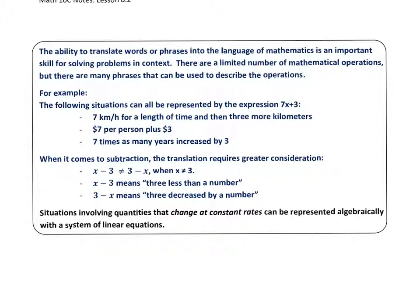When it comes to subtraction, however, the translation requires greater consideration. x minus 3 is not equal to 3 minus x, unless x is equal to 3. But, say x is equal to 5. 5 minus 3 is equal to 2, but 3 minus 5 is equal to negative 2. So those examples would not be the same. You have to be careful with subtraction and the wording.